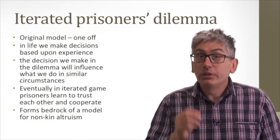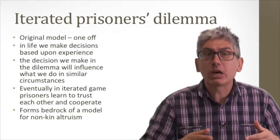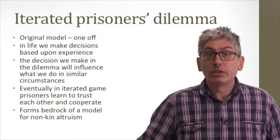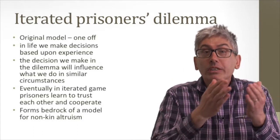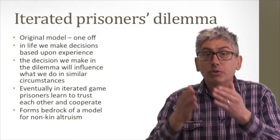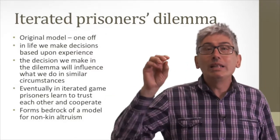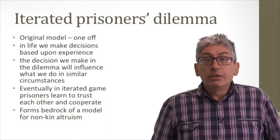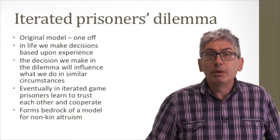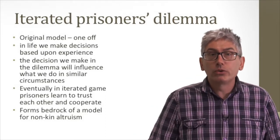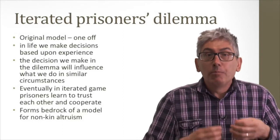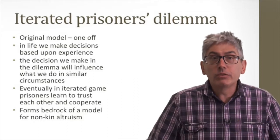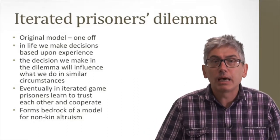Because in life, the decisions we make have repercussions. And then we have to make other decisions. And we make those other decisions based upon our experience of outcomes from the original decisions. We learn from experience. So he hit upon the idea that an iterated prisoner's dilemma model would do the trick for altruism.